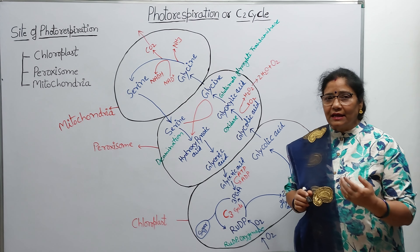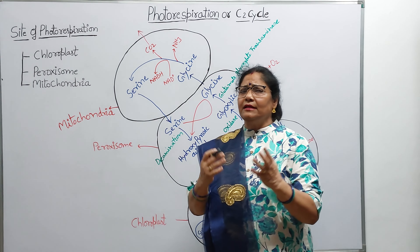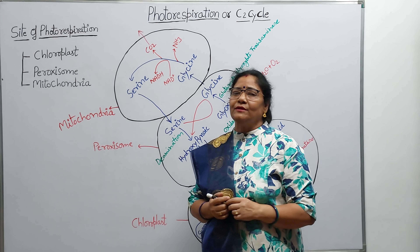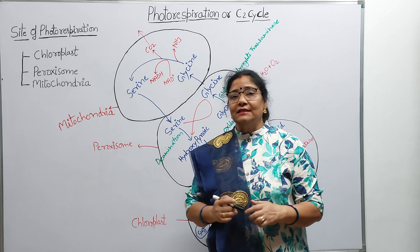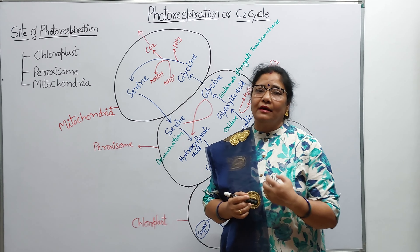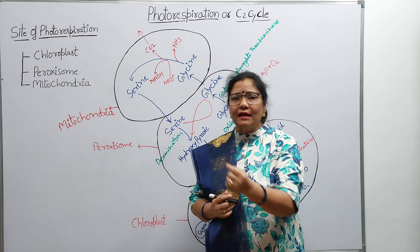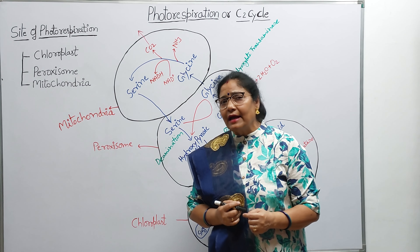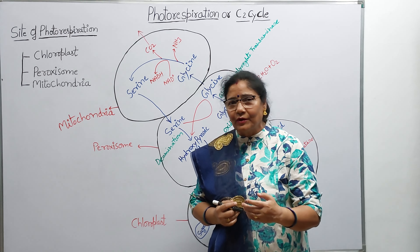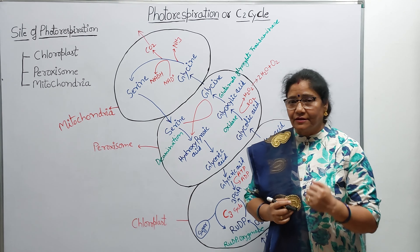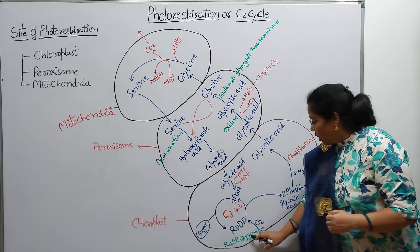Hum jante hain ki duniya mein sabse abundant enzyme jo sabse zyada paya jata hai, use kehte hain ribulose diphosphate carboxylase, jiska mukh kaam hai carboxylation karna — yani carbon dioxide ke fixation ke liye jo sabse pahla enzyme involve hota hai. Is enzyme ka naam hai ribulose diphosphate ya biphosphate carboxylase — RUDP oxygenase.